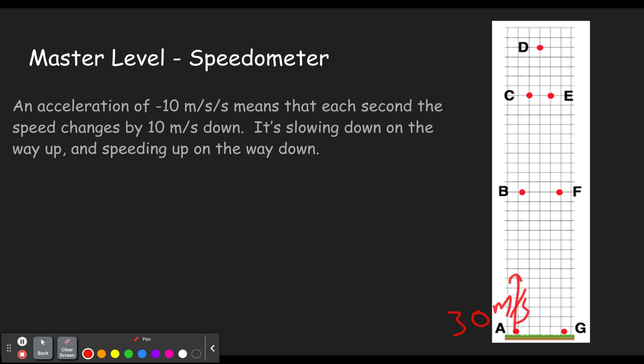And of course that's up. Then one second later, these dots are all one second apart. It'll be going 20 up. Then it'll be going 10 up. Notice it's changing by 10 down each time. Since it's going up, 10 down, a 10 down change makes it smaller and smaller. At the top, it'll be zero. Then we'll have a velocity of 10 down, then 20 down. Notice it's speeding up now and 30 down.